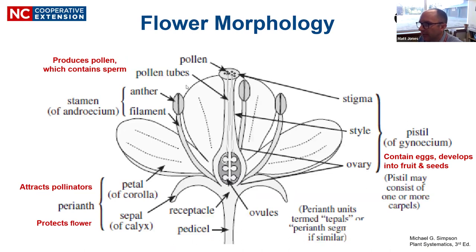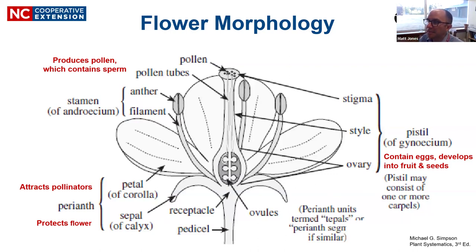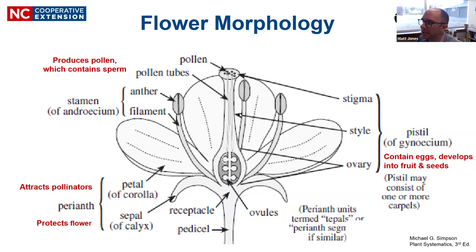Here's another diagram showing the same idea: calyx, corolla, androecium, gynoecium, consisting of sepals, petals, anthers, and pistils. In master gardener classes we do a dissection of Asiatic lilies — really big flowers where you can see all the parts. In the case of lilies, the petals and sepals look very similar. There's still a set of sepals on the outside in a concentric ring, but they look very similar to the petals. When petals and sepals look similar, there's another term — they're called tepals.